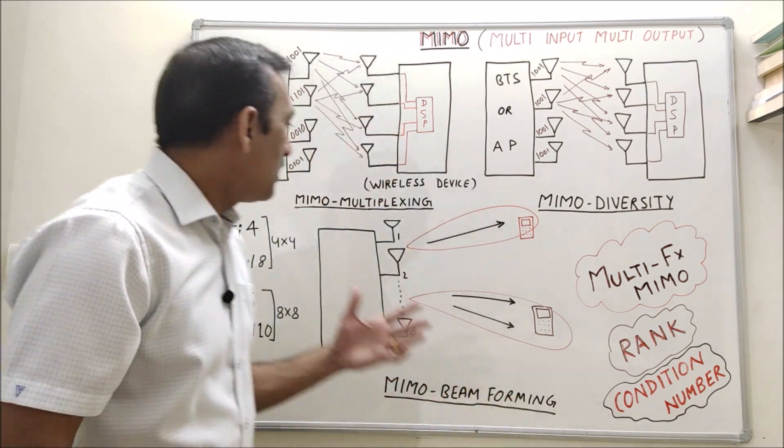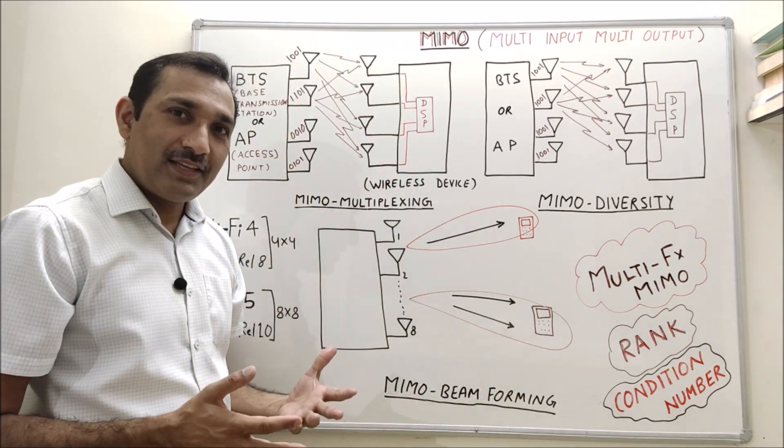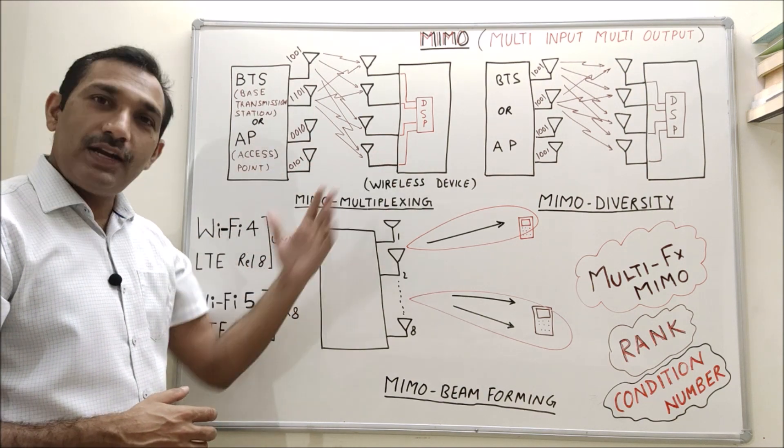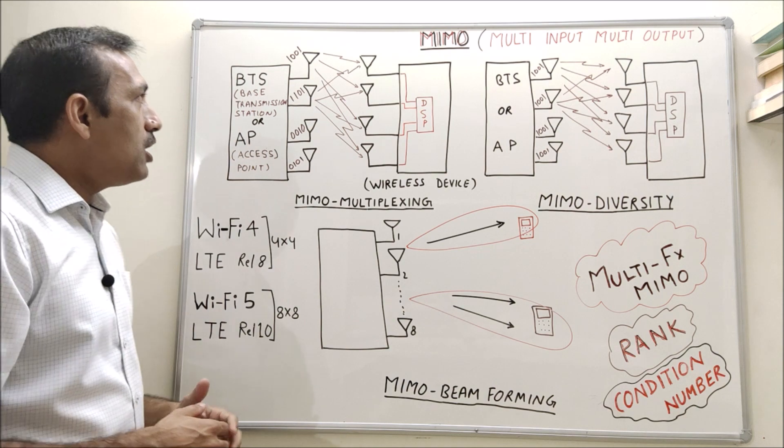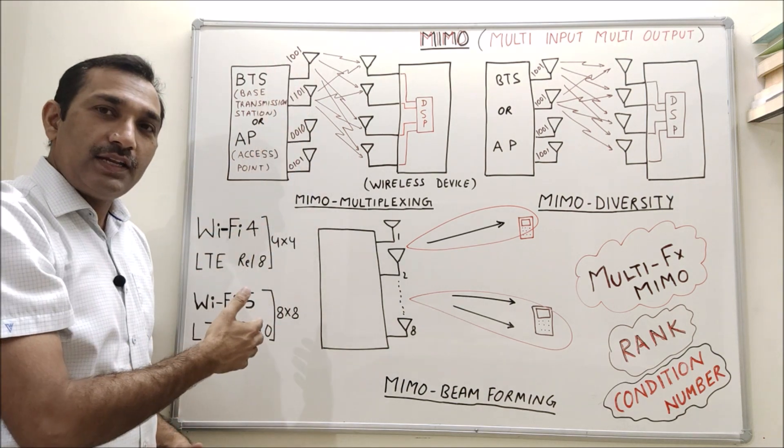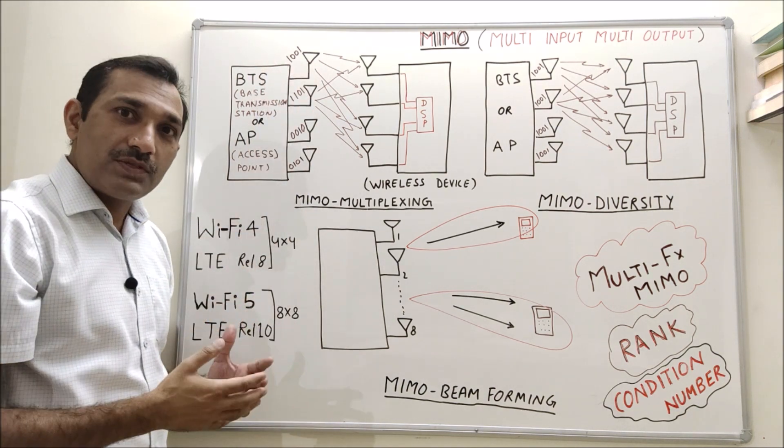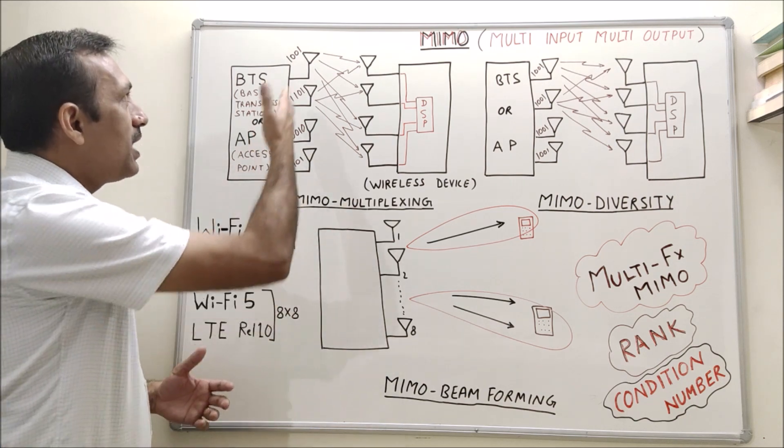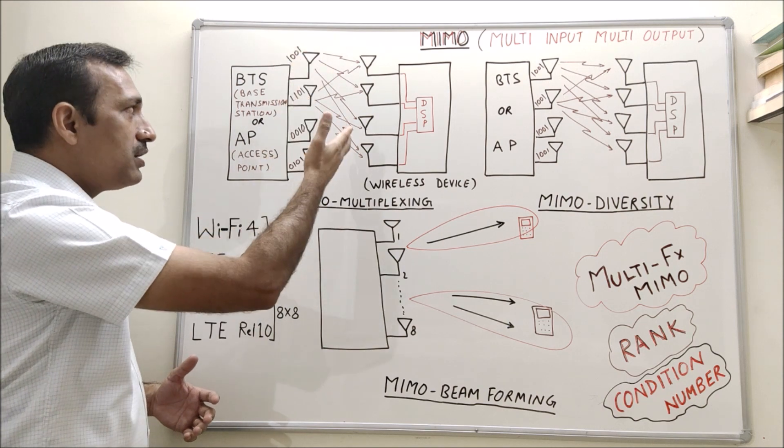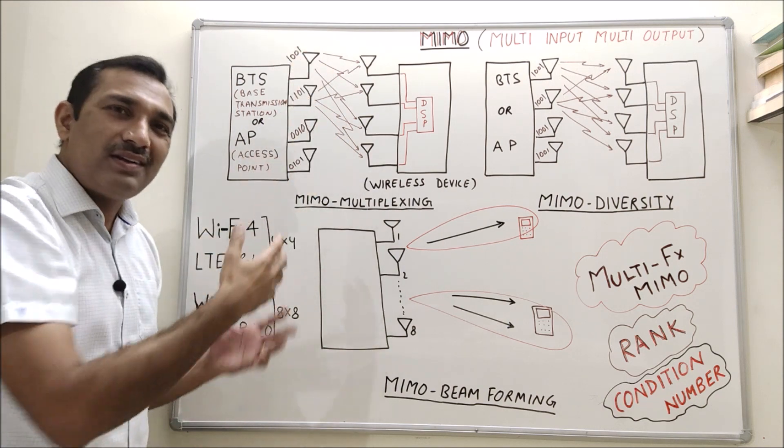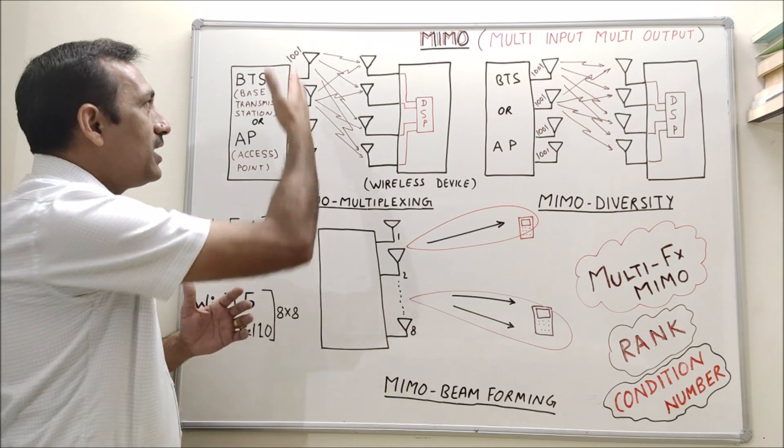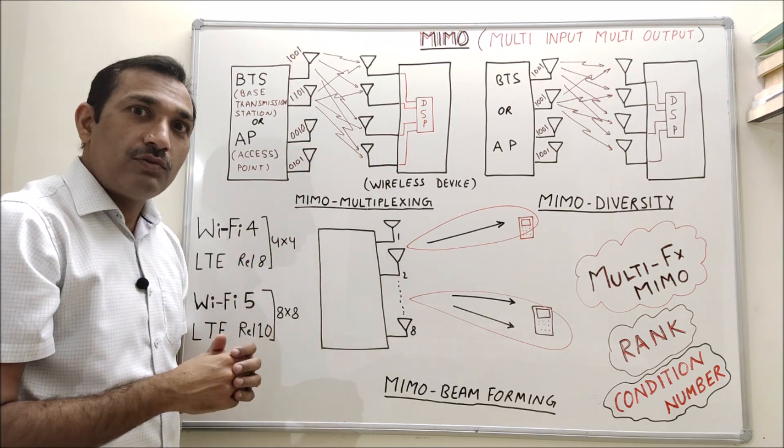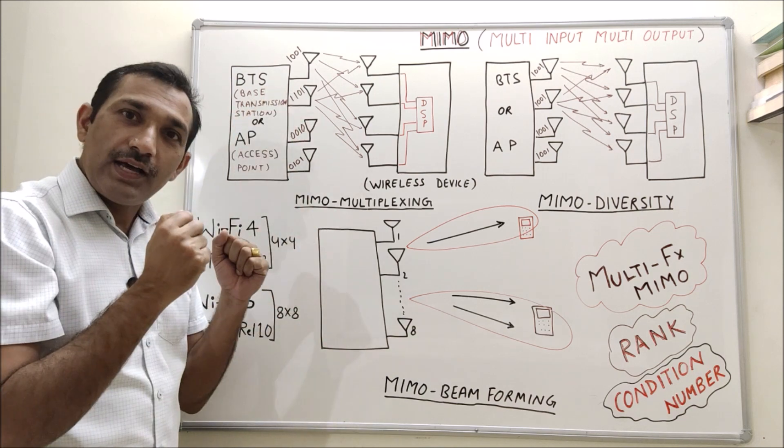Let's talk about MIMO multiplexing. So here we have four antennas at transmitter and four antennas at receiver. Now, all these antennas are transmitting different streams. Different streams means different data. For example, I have kept here one zero zero one one one one zero one zero one zero zero one zero. This is just to show that every antenna is transmitting different data. That means we are able to transmit lot of data simultaneously.